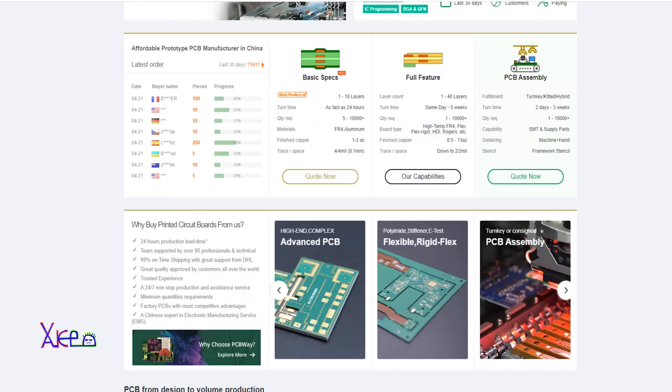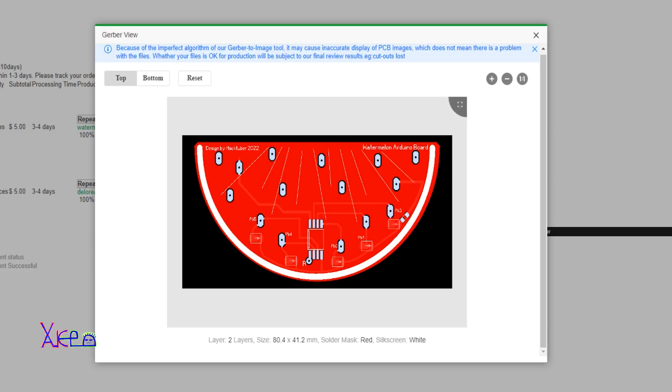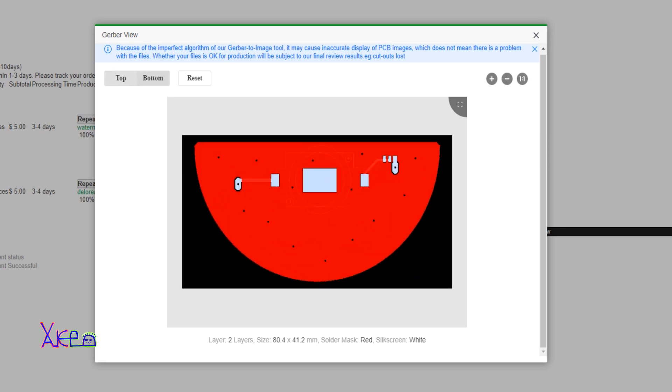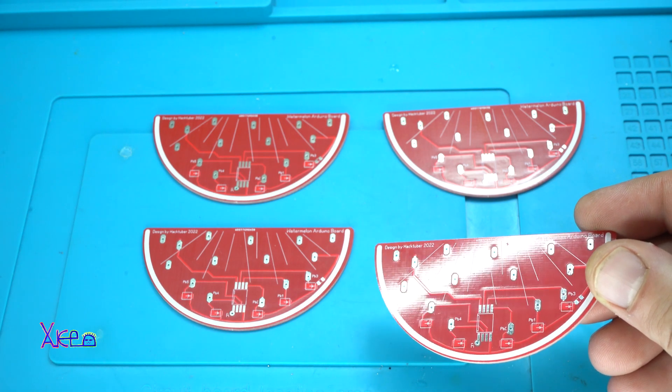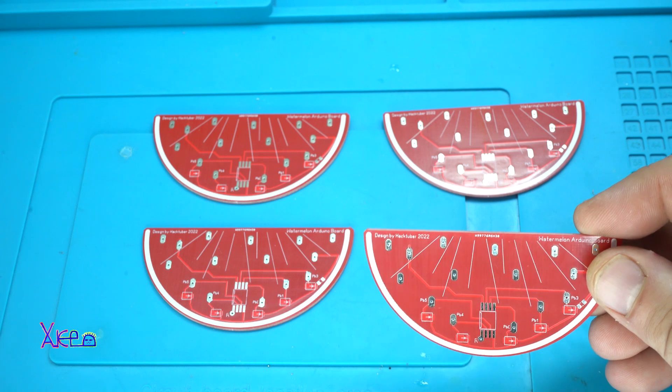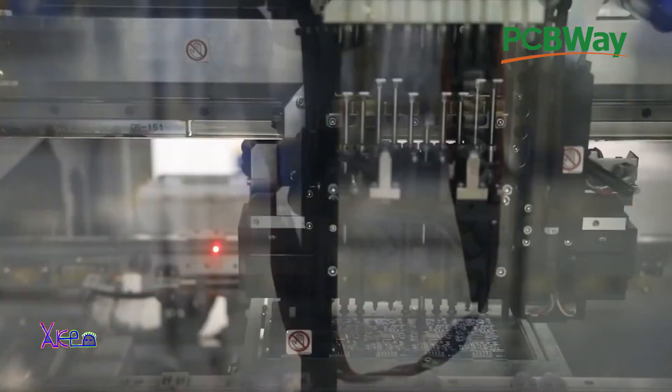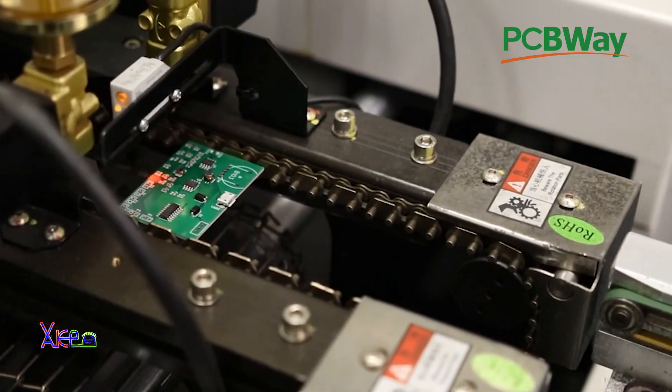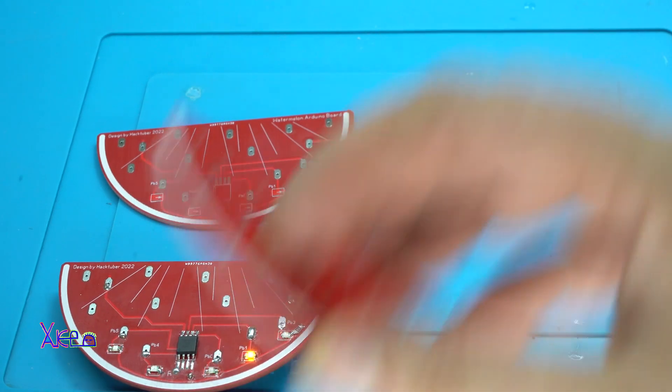This video is sponsored by PCBWay. The watermelon design Gerber files I upload to PCBWay website and choose advanced PCB service, which is high quality production of printed circuit boards. Beside regular PCB production, check PCB assemble service from PCBWay. They are amazing company with proven PCB production. After ordering the PCBs and waiting couple of days to receive them.